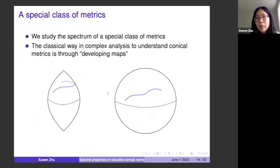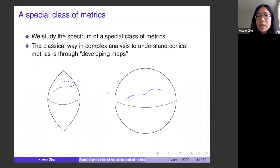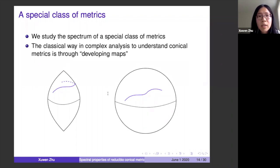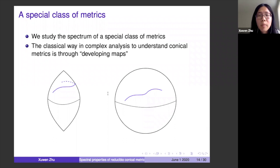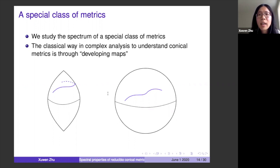We mostly focus on a special class of metrics called reducible metrics. Reducible metrics are defined using the developing map, which I'll now explain. These metrics are very special — they are all in the singularity of the moduli space — making them model singular metrics to study.